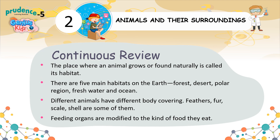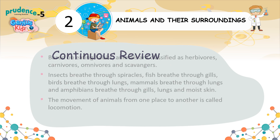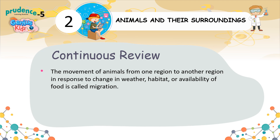Continuous Review. The place where an animal is naturally found is called its habitat. There are five main habitats on the earth: forest, desert, polar region, freshwater, and ocean. Different animals have different body coverings — feathers, fur, scales, and shells. Feeding organs are modified to the kind of food they eat; animals are classified as herbivores, carnivores, omnivores, and scavengers. Insects breathe through spiracles; fish breathe through gills; birds and mammals breathe through lungs; amphibians breathe through gills, lungs, and moist skin. The movement of animals from place to place is called locomotion. The movement of animals from one region to another in response to change in weather, habitat, or availability of food is called migration.